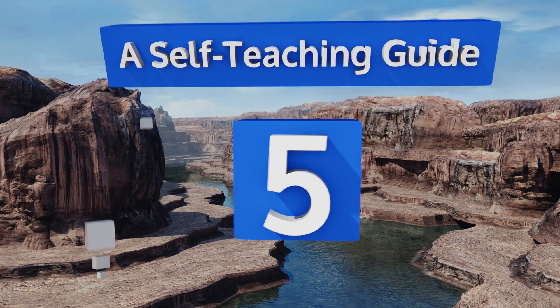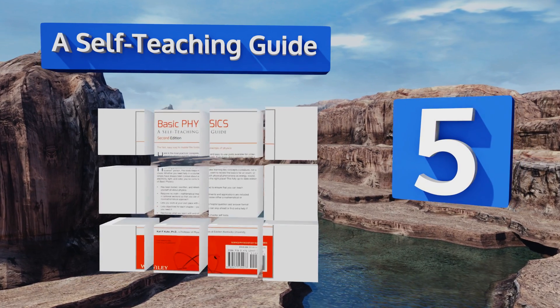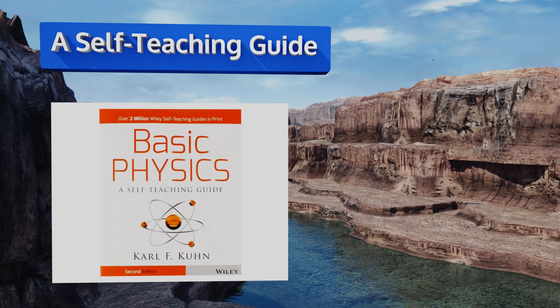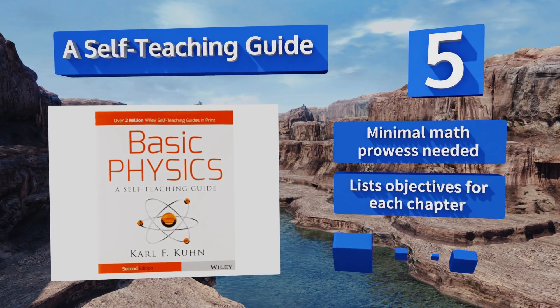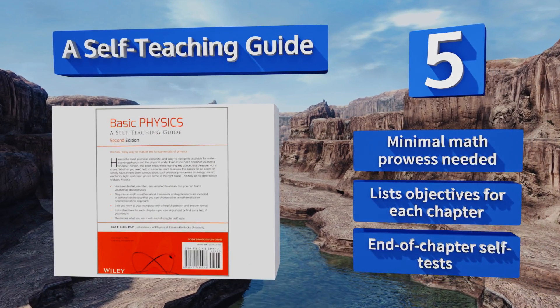At number five, the most striking thing about A Self-Teaching Guide by Karl F. Kuhn has nothing to do with force or gravity, but rather with the fact that it costs so little. This easy to read option is a great primer for anyone interested in advanced study. Minimal math prowess is needed, and it lists objectives for each chapter. It contains end of chapter self-tests.